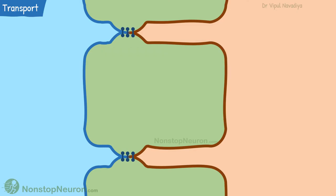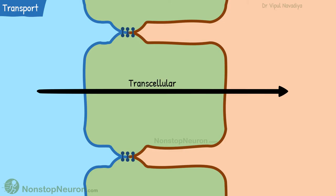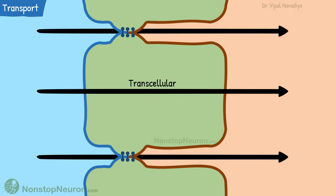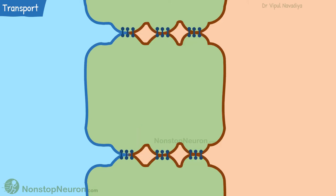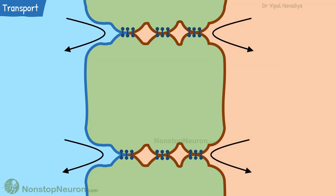So far we have talked about transport through the cell, which is called transcellular movement. Along with this, substances can also move through the space in between two cells — this is called paracellular movement. The passage through this path depends on how tight the junctions are. Some junctions are leaky, allowing paracellular movement — for example, the proximal part of the renal tubule — whereas others are tight and do not allow passage — for example, the collecting duct.